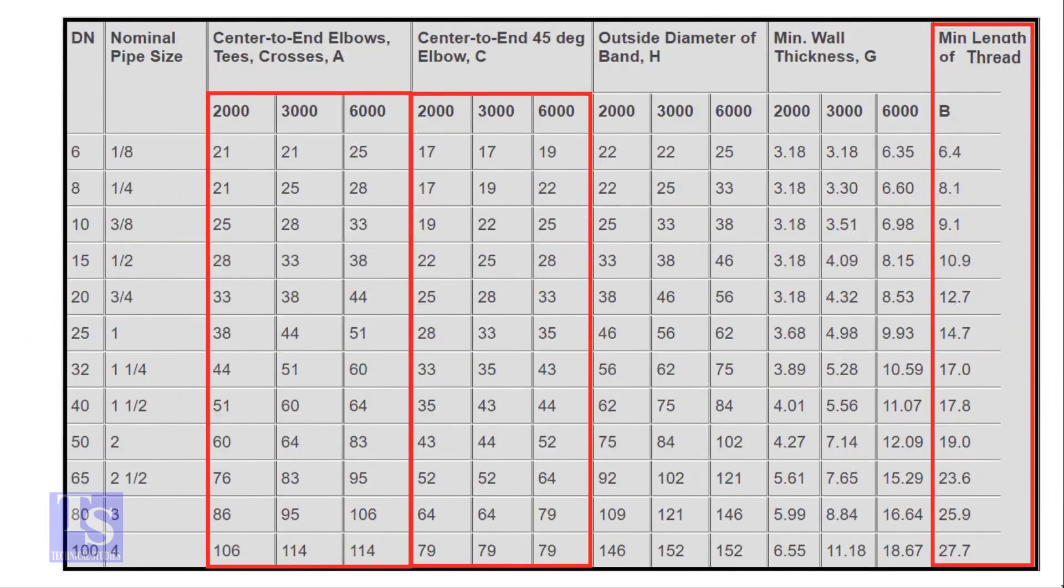Let us check the chart for the other dimensions. The 4-inch elbow with 3,000-pound rating, the takeoff length is 114 millimeters. For the 45-degree elbow, it is 79 millimeters.